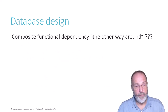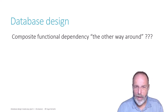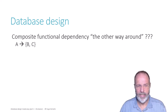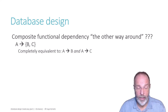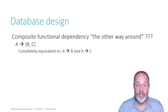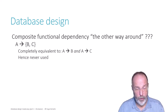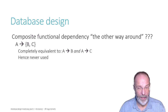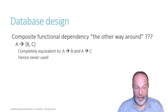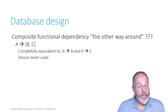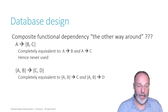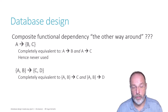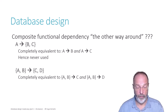You might wonder: if the combination of A and B can determine C, can it also work the other way — just column A determining the combination of B and C? Yes, that can happen, but it is exactly equivalent to saying A determines B and A determines C — two separate simple functional dependencies. So this type of compound right-hand side is never used; we always separate it into parts. Similarly, if the combination of A and B determines the combination of C and D, we separate the right part into two FDs, though we cannot separate the left part.